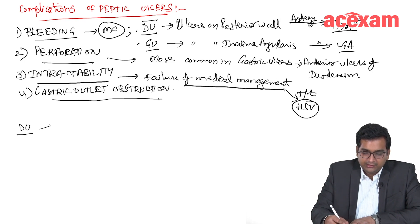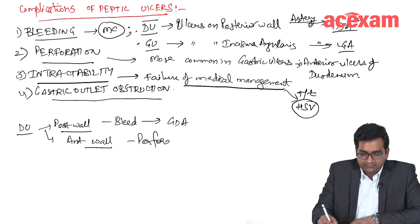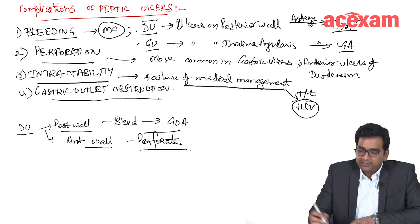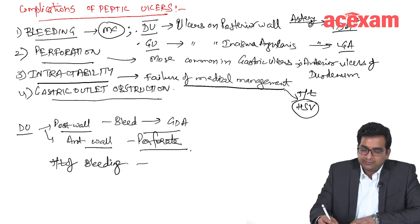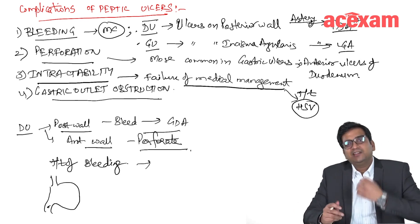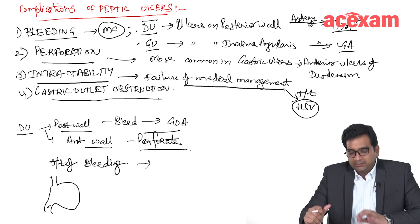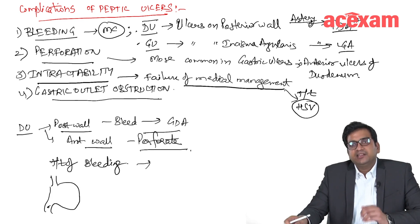In the duodenum, ulcers on the posterior wall bleed more — the artery is the GDA — while ulcers on the anterior wall tend to perforate. For the treatment of bleeding, we will first do endoscopy to localize the site of bleeding, then place endoscopic clips or perform electrocoagulation. If the bleeding does not stop and there is failure of endoscopic management, we proceed to surgery.